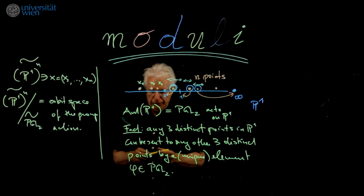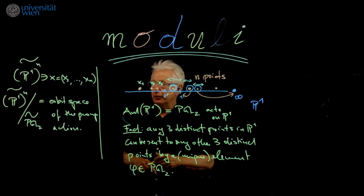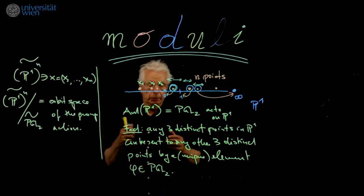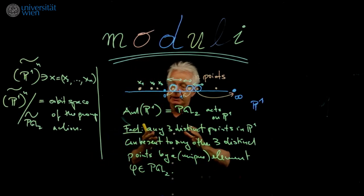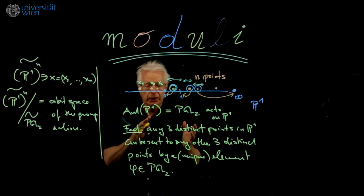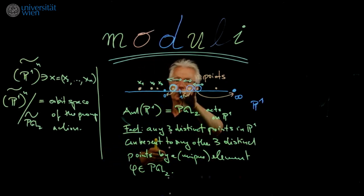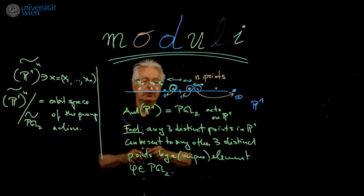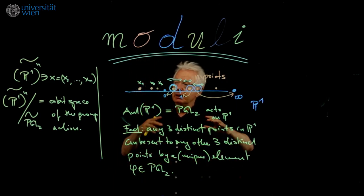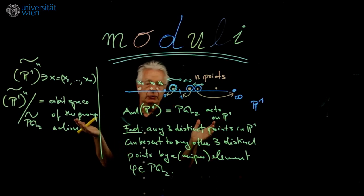Now, it turns out that you get something which is smooth. Actually, it's P^1 to the n minus 3. But this construction is not symmetric because you chose three of these points. That's the first disadvantage. And the second, the space that you get is not closed. It is not compact.